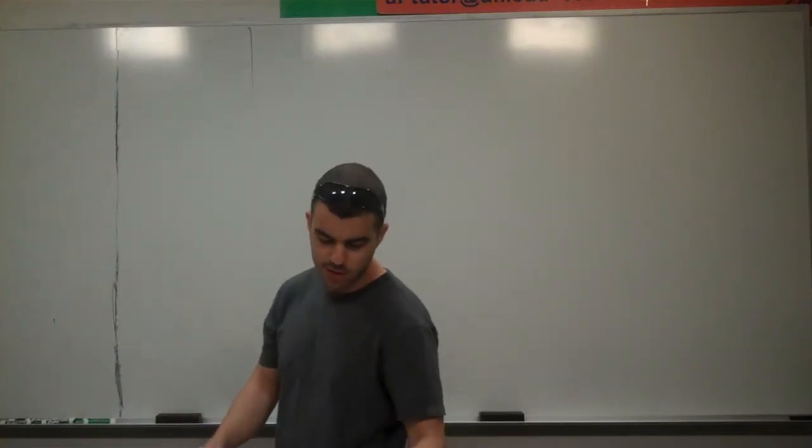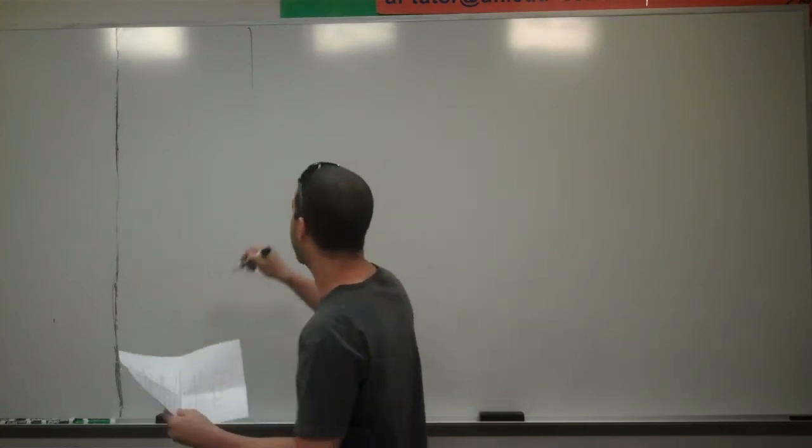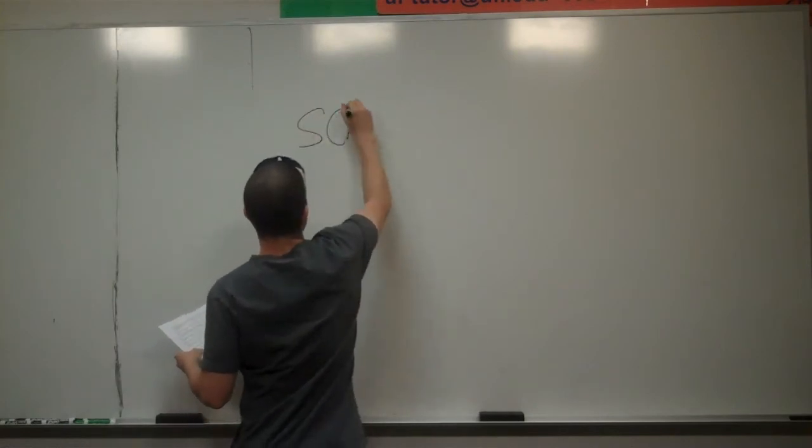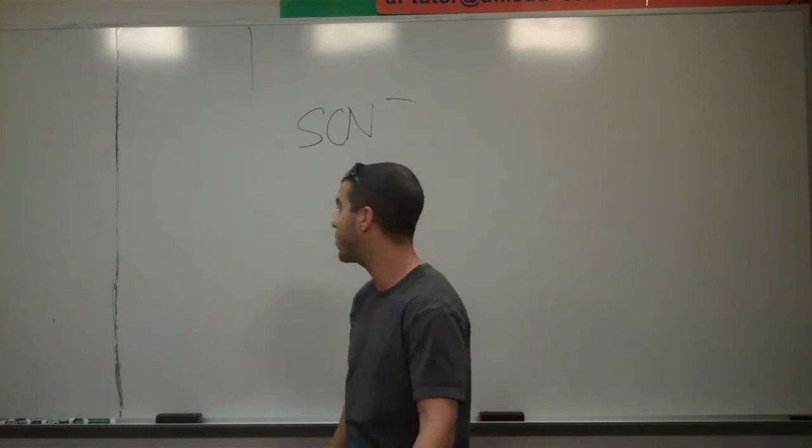I'm going to start by working on number 17. What is the formal charge of the nitrogen atom in the Lewis structure for the most significant resonance contributor for the thiocyanate ion? And they give us a hint that there are three resonance structures.